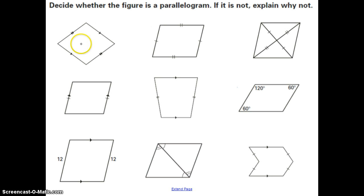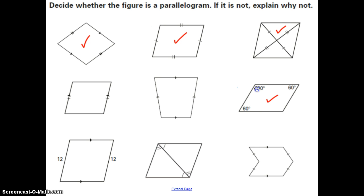This first one is a parallelogram because of the definition — opposite sides are parallel. The second one is a parallelogram because of the property that states opposite sides are congruent. The third is a parallelogram because of the property that states diagonals bisect each other. The fourth is a parallelogram because of two properties: opposite angles are congruent and consecutive angles are supplementary.